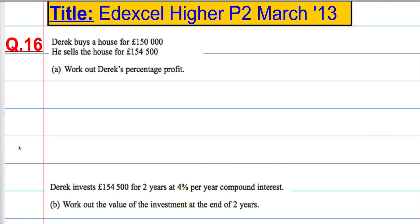Question 16. Derek buys a house for £150,000 and he sells the house for £154,500. We are asked to work out Derek's percentage profit.